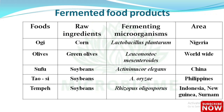Sufu — raw ingredient: soya beans, fermenting microorganism: Actinomucor elegans, area: China. Taoci — raw ingredient: soya bean, fermenting microorganism: Aspergillus oryzae, area: Philippines. Tempeh — raw ingredient: soya beans, fermenting microorganism: Rhizopus oligosporus, area: Indonesia, New Guinea, and Suriname.